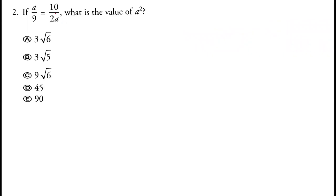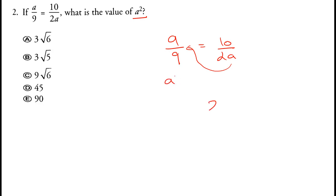Now a over 9 equals 10 over 2a. What is the value of a squared? If we cross-multiply, bringing a to the left side, we get a squared equals 10 multiplied by 9 divided by 2. Two fives are ten, so the result is 45. The correct answer is option D.